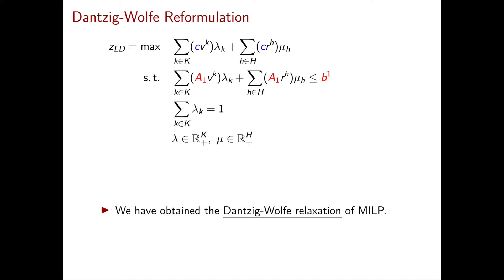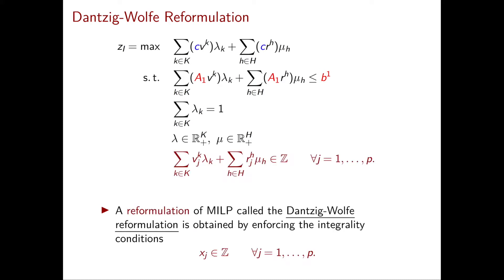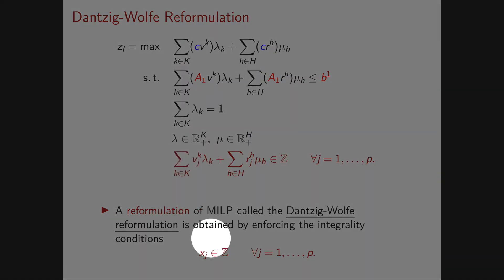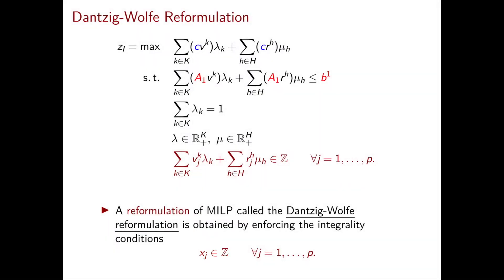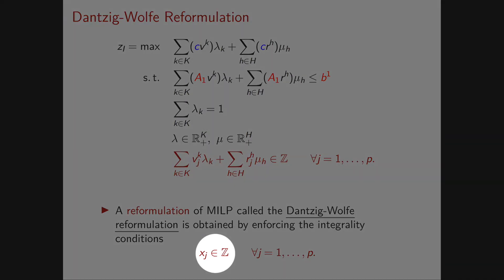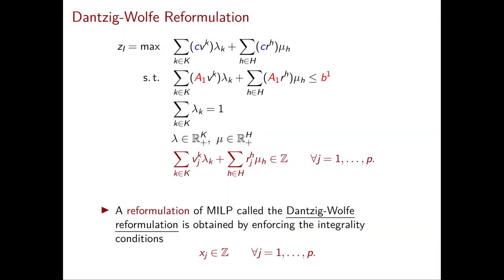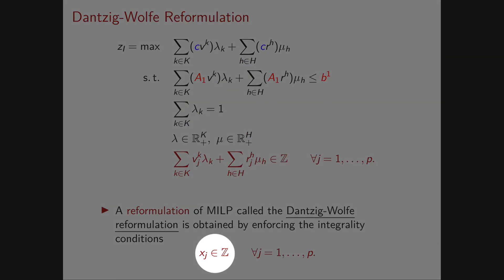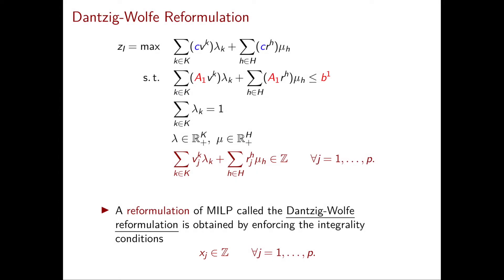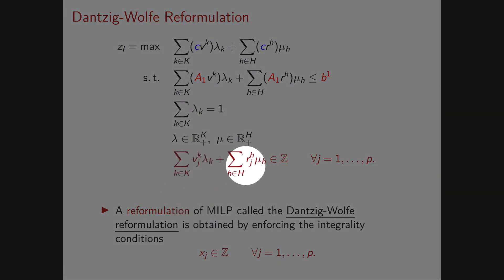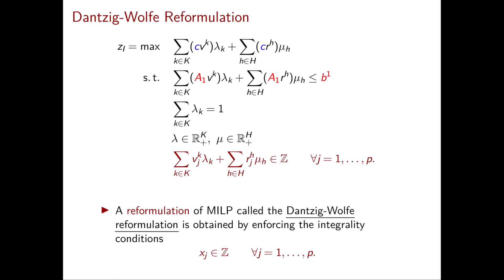Note that at this point we have a linear programming problem where the variables are the λ's and μ's — there is no x anymore. If instead of a relaxation we want a full reformulation of the original MILP, we need to enforce integrality on the first p variables. Since we no longer have x variables, we substitute x with the formula from the previous slide, obtaining the integrality condition in terms of λ and μ. This is called the Dantzig-Wolfe reformulation.